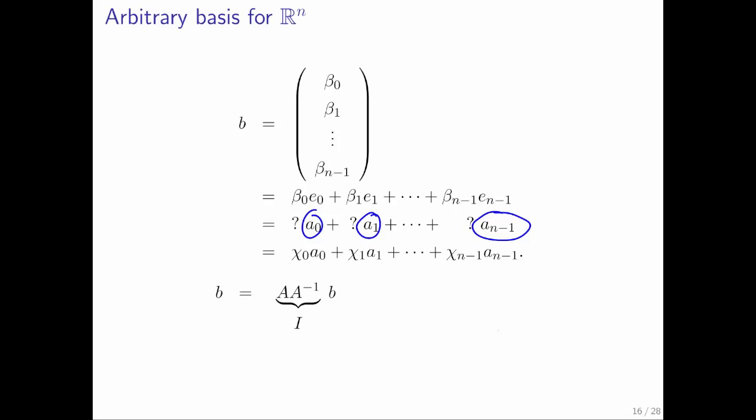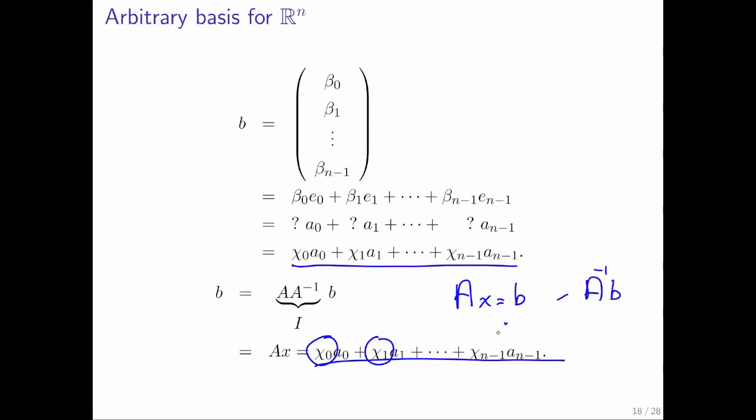So we can write b as A inverse b, which we can then write as A times x, which then we recognize is just the linear combination of vectors that we want. What does that mean? That means that to find these coefficients, when you use a0 through a_n-1 as the basis for R^n, all you need to do is solve Ax = b or multiply b by A inverse to get x.